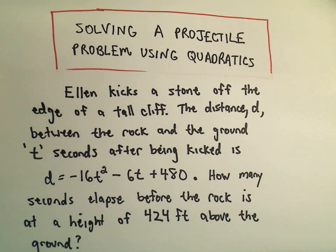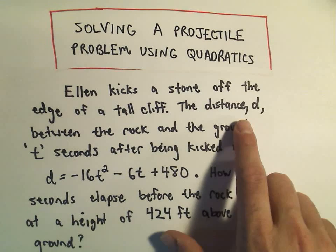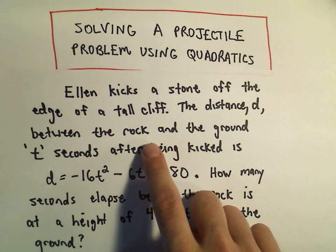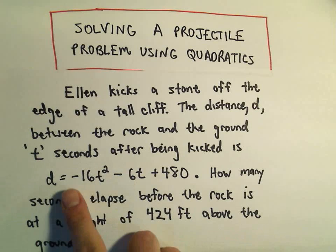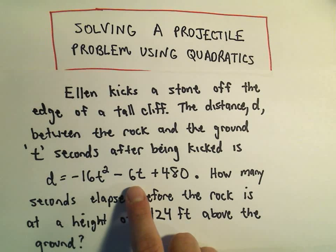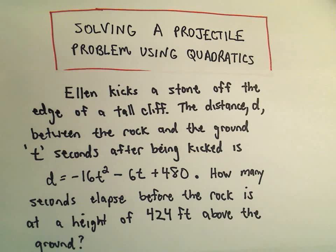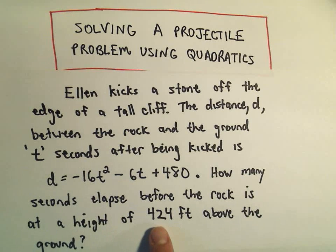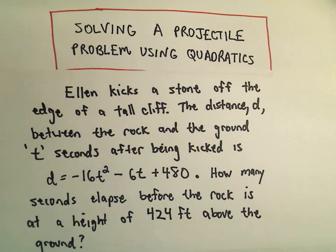Suppose we have Ellen here and she kicks a stone off the edge of a tall cliff and suppose we know that the distance d between the rock and the ground, t seconds after being kicked is d equals negative 16t squared minus 6t plus 480. Suppose d here is measured in feet and we want to know how many seconds elapsed before the rock is at a height of 424 feet above the ground.